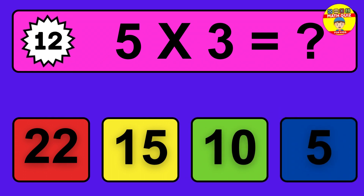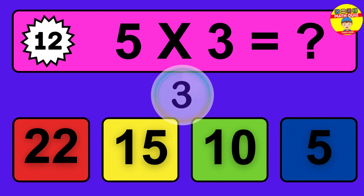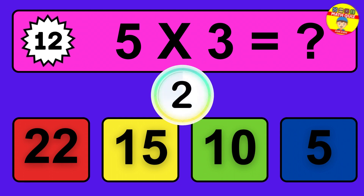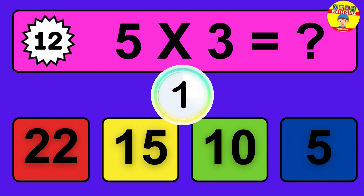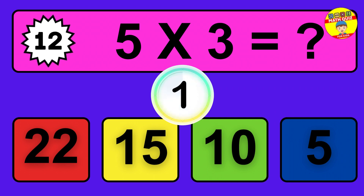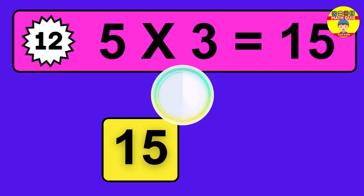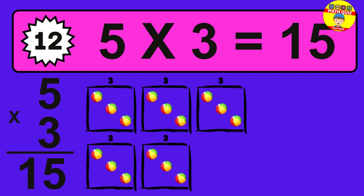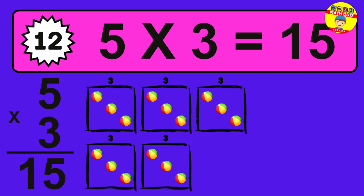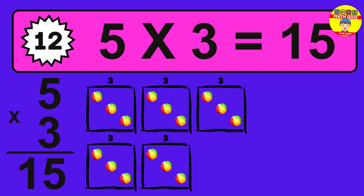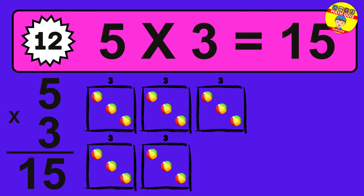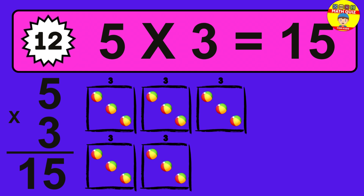Question 12. 5 times 3 equals what? The answer is 5 times 3 is 15. To calculate, we have 5 groups with 3 balls each one. So how many balls do we have? 15 balls.